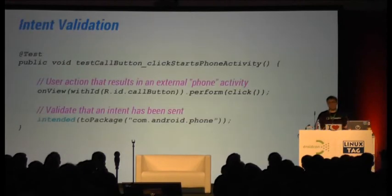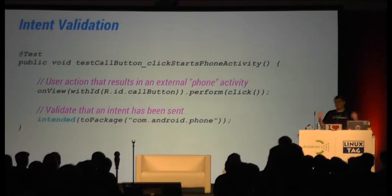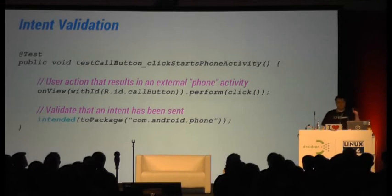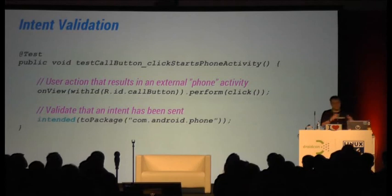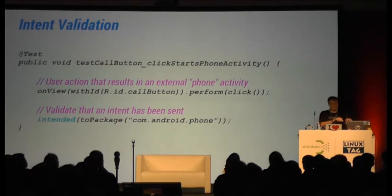Then you can do easy intent validation. We have an example where you want to verify an intent was sent to the phone dialer — you click your button and then assert with intento that there was an intent sent to the phone dialer. That's your assertion right there.